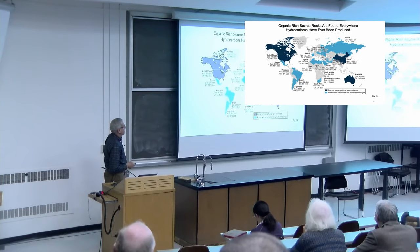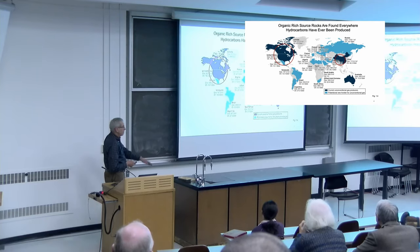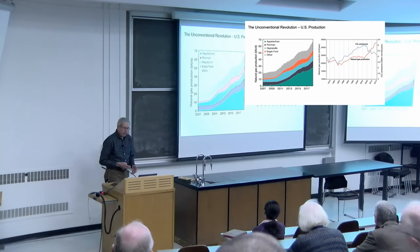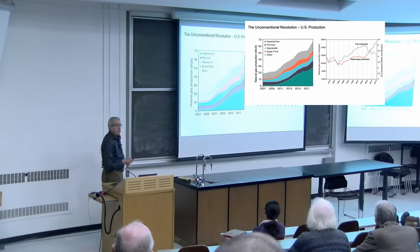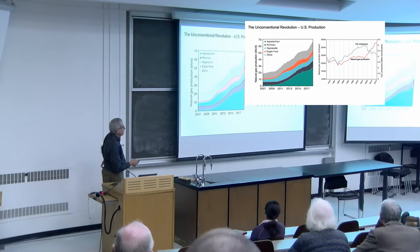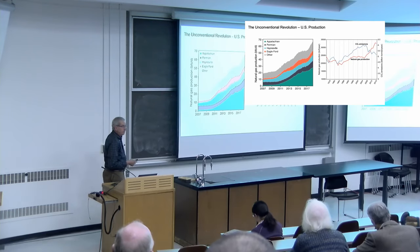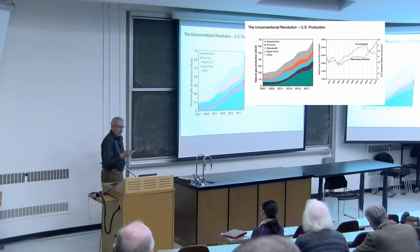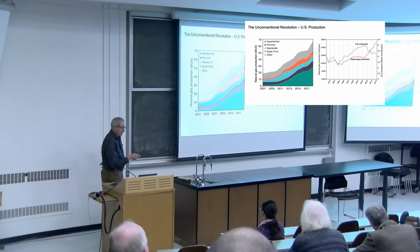This is having a huge effect around the world. All the action has really been in the United States and Canada, but China is producing a lot of gas using the same techniques, and things are taking off in Argentina. As a result of cheap gas, there's been tremendous fuel switching from coal to natural gas in the United States — today, more electricity is produced with natural gas than coal, and CO2 emissions are dropping rapidly.